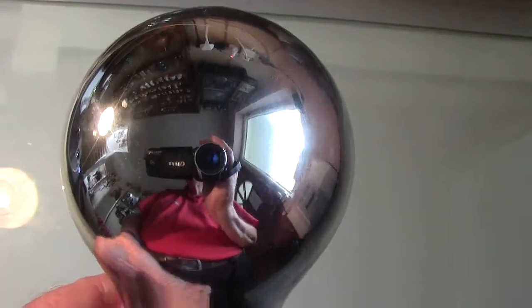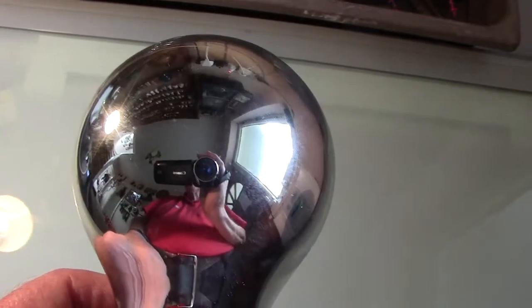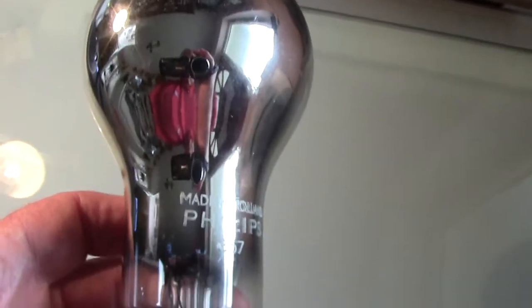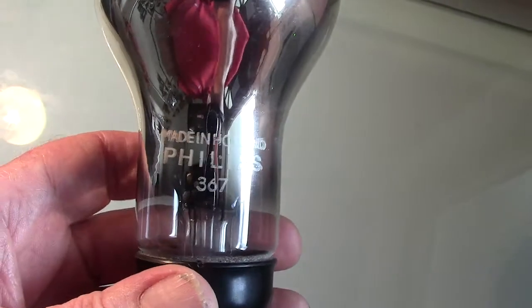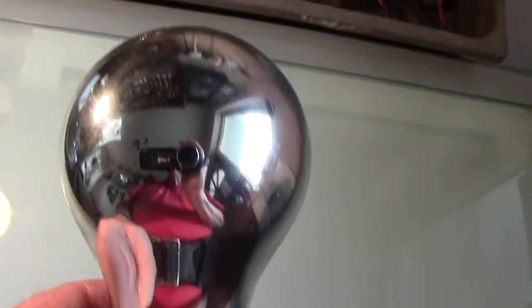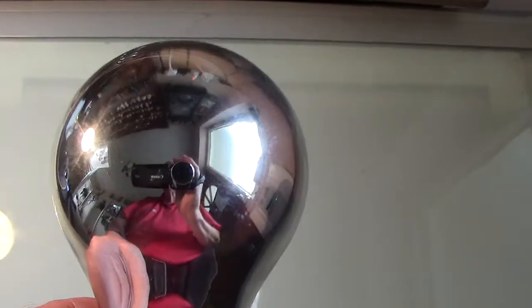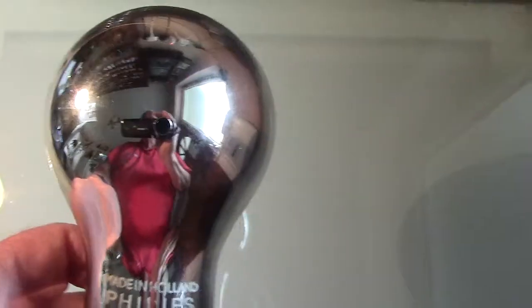It's completely silvered over, so all you'll be able to see on there is my ugly mug and anything else that's going on in the room. 367, that can be checked up on eBay or one of the sites which deal with the old valves. Anyhow, it's interesting and something that was added to the collection.